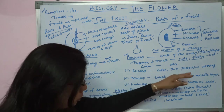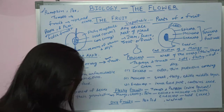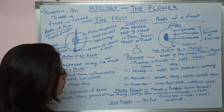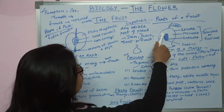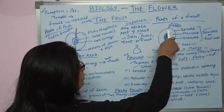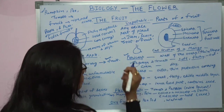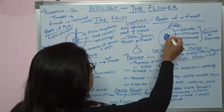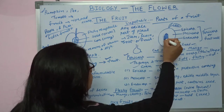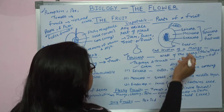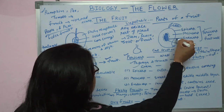The epicarp is the outer thin protective covering. The mesocarp is the sweet, fleshy, edible middle layer of the fruit. And the endocarp is the innermost layer, which is hard and contains the seed inside it. The second part of the fruit — the seed — is enclosed within the endocarp.